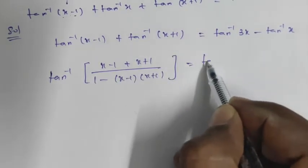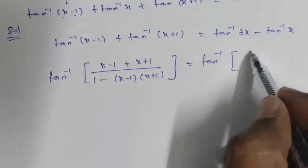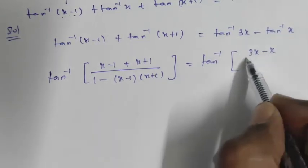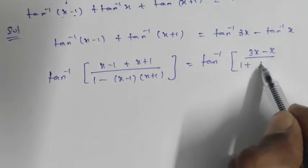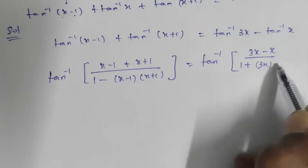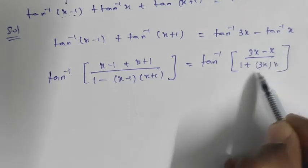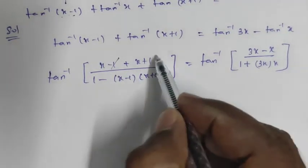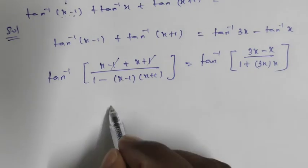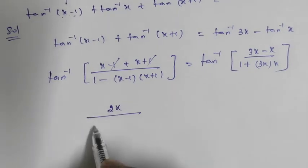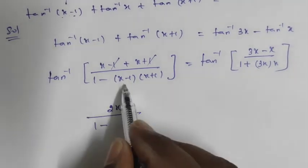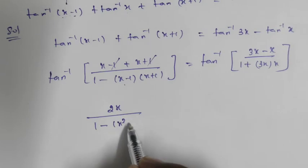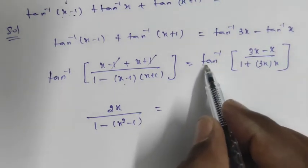Applying the tan inverse formula: the numerator is 2x, and the denominator is 1 minus (x squared minus 1), which equals 2 minus x squared. So the left side becomes tan inverse of 2x divided by (2 minus x squared), and the right side is tan inverse of 2x divided by (1 plus 3x squared).